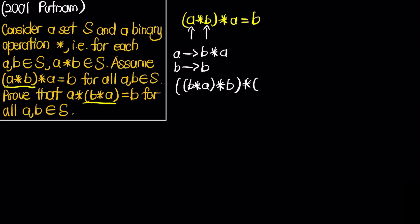We know that this equals B, and if we observe, we can see that this whole thing is actually equivalent to A because it's just the original rule with A and B being switched.